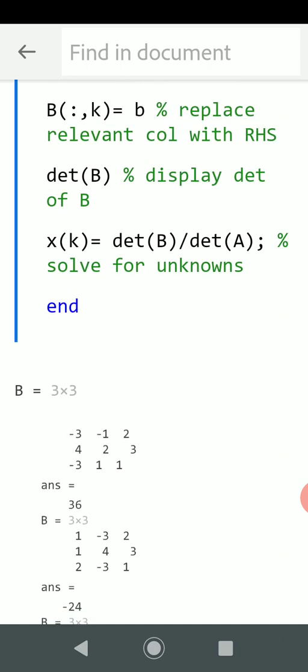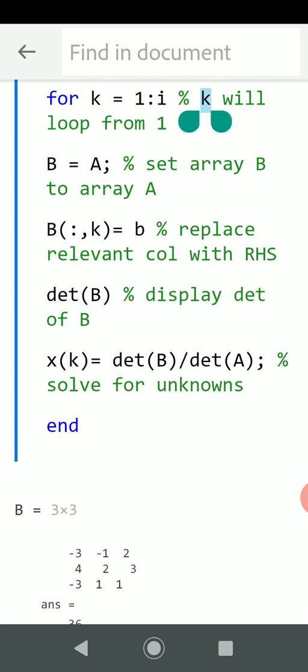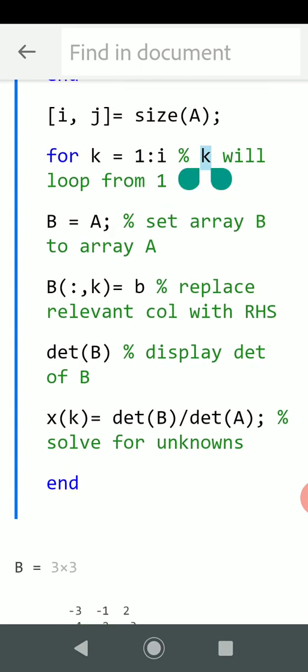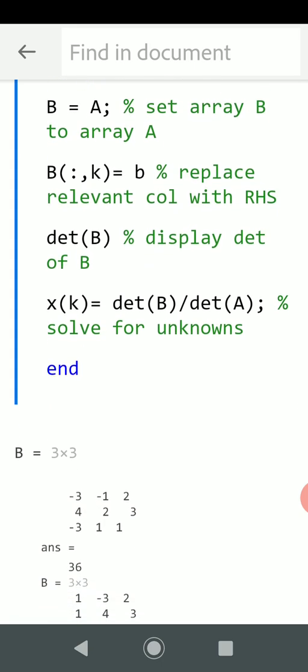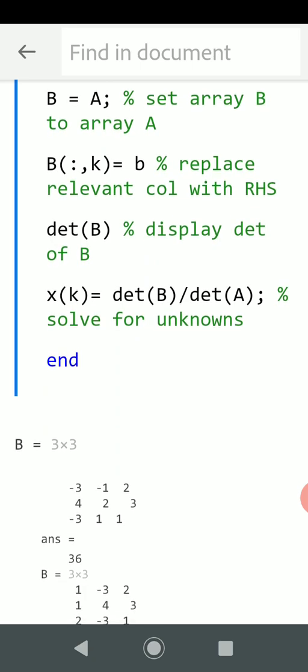something like that, doesn't matter. So we do that, we go around the loop again. So that's up to where we are there. k is now 3. We loop around again and we solve for the unknown term z.